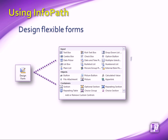Along with standard form controls like text and list boxes, we can insert controls that let users add, remove, replace or hide sections of a form — things like repeating tables, choice groups and optional sections that let us design a truly flexible form template.